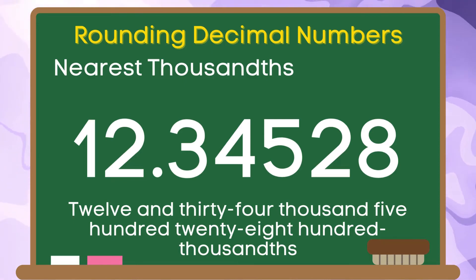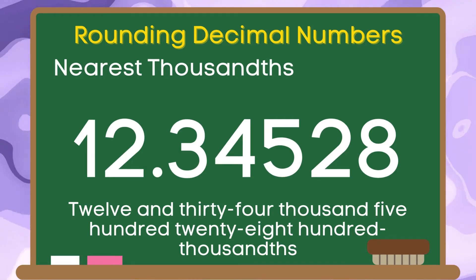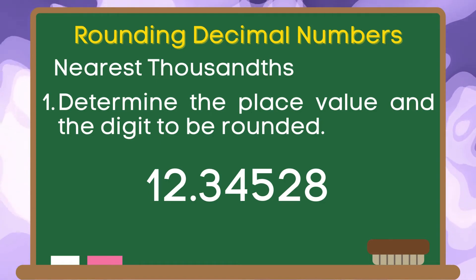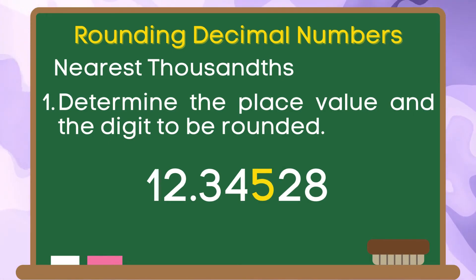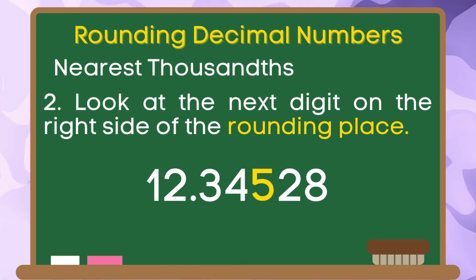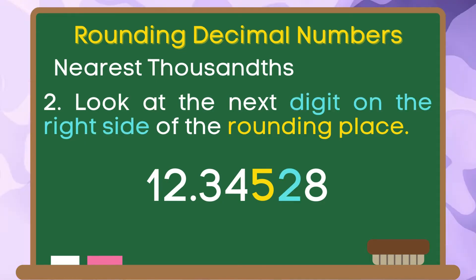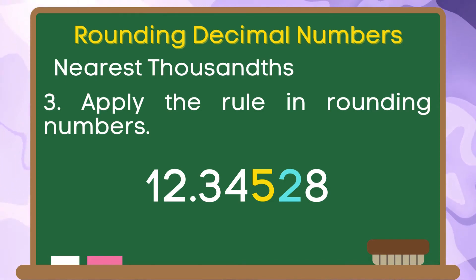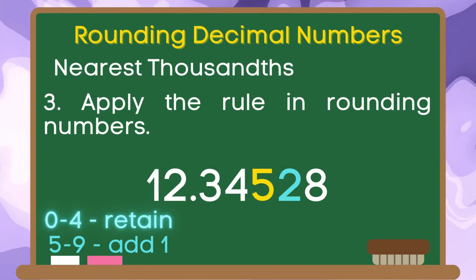And for the last example, let us round 12 and 34 thousand 528 hundred-thousandths to the nearest thousandths. Step 1: determine the place value and the digit to be rounded. We are asked to round the given decimal number to the nearest thousandths. The digit in the thousandths place value is 5. Step 2: look at the next digit on the right side of the rounding place. The digit at the right side of 5 is 2. Step 3: apply the rule in rounding numbers. Since 2 belongs to the group of 0 to 4, we are going to retain the value of 5 in the given number.